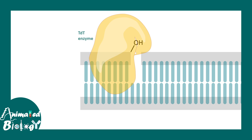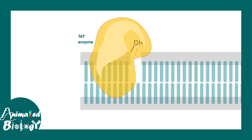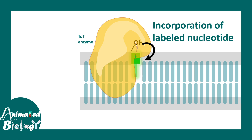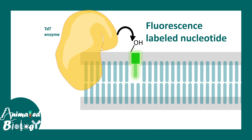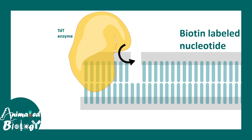When we add the TDT enzyme — which is generally found in several immune cells and required for VDJ recombination — it can incorporate specific nucleotides at the 3' hydroxyl open ends. This nucleotide which is incorporated can be a labeled nucleotide, a fluorescently labeled nucleotide, or a biotin-labeled nucleotide, which can later be detected by fluorescently labeled streptavidin.